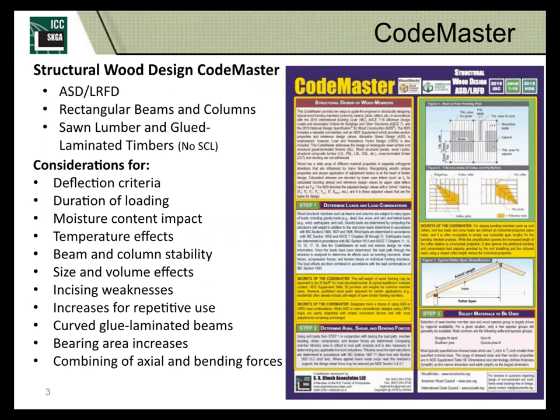The Codemaster has lots of members and lots of information associated with the individual members you might be designing. It includes a one-stop shopping spot for all the adjustment factors. For those familiar with the NDS — the National Design Specification for Wood Design, which is adopted by the Building Code — adjustment factors are sometimes scattered across multiple publications and multiple chapters. The Codemaster distills it all in one location, which is really helpful.